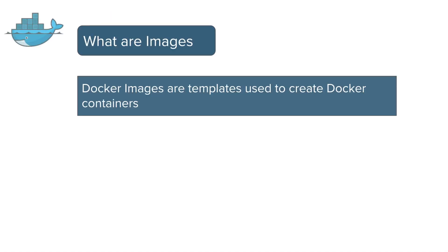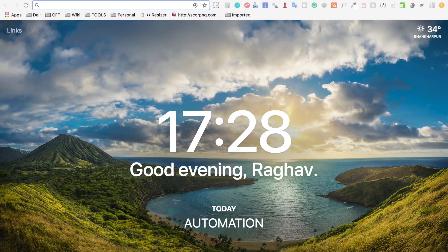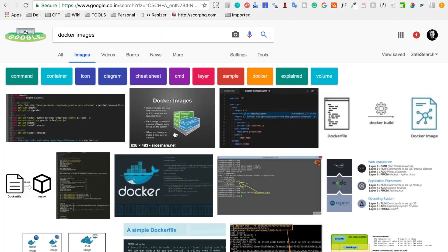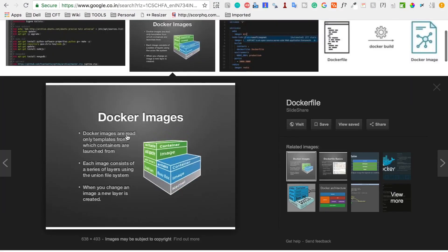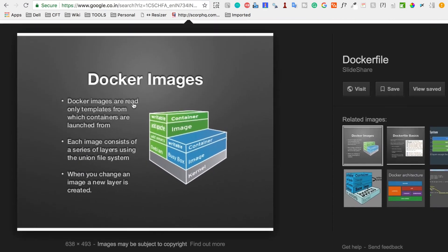Docker images are templates which are used to create Docker containers. A container is a running instance of a Docker image. Docker images are read-only templates from which containers are launched, and each image consists of a series of layers.